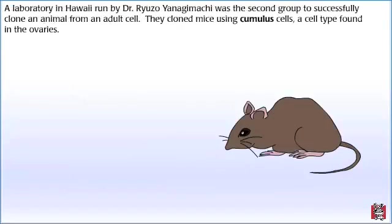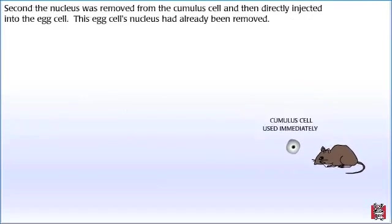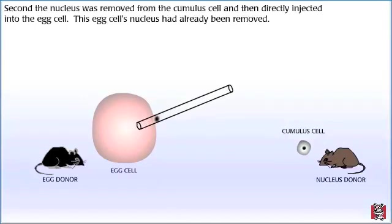A laboratory in Hawaii run by Dr. Ryuzo Yanagamachi was the second group to successfully clone an animal from an adult cell. They cloned mice using cumulus cells, a cell type found in the ovaries. The cloning method used by the Hawaii lab was different from the Dolly method in two ways. First, the cells used to clone the mice were not grown in culture but instead were used immediately. Second, the nucleus was removed from the cumulus cell and then directly injected into the egg cell, whose nucleus had already been removed.